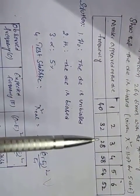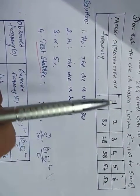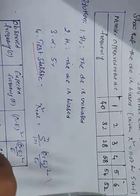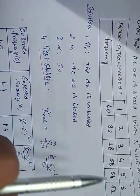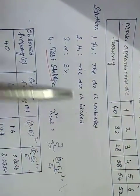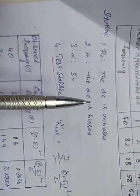The die was thrown and the numbers are 1 to 6. The observed frequencies are given for faces 1, 2, 3, 4, 5, and 6.